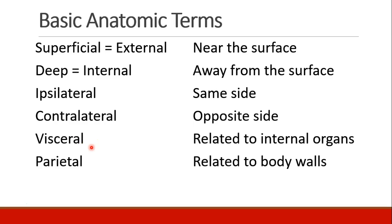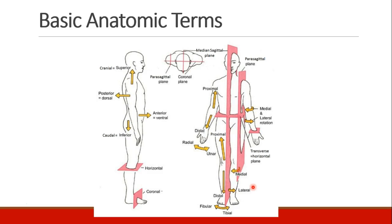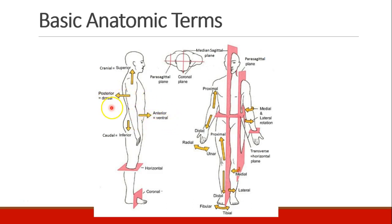Visceral refers to internal organs and parietal refers to body walls, like the wall of the thorax or of the abdominal cavity. We also have a diagram which shows a lot of directions when discussing the human body and anatomy. Superior is up and inferior is down. Sometimes we call them cranial towards the head and caudal towards the tail, which is really towards the feet. The front surface is called anterior or ventral, and the back surface is called posterior or dorsal, like a dorsal fin.